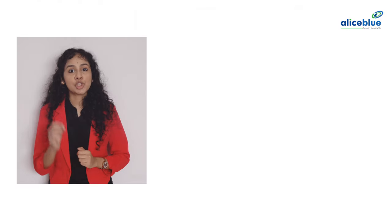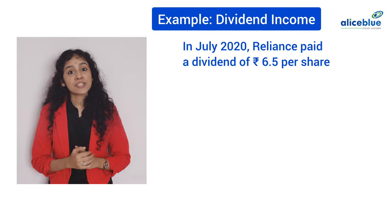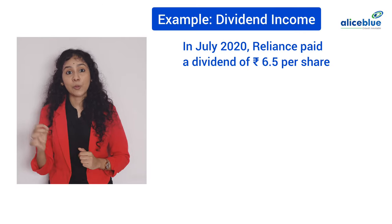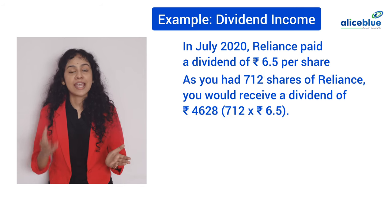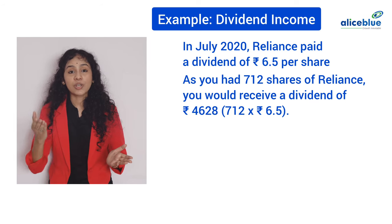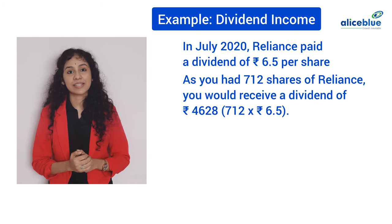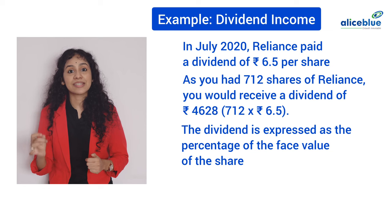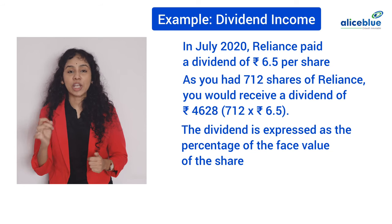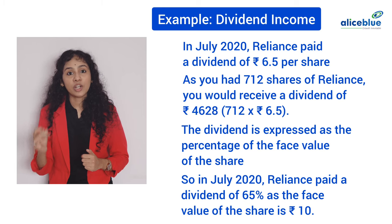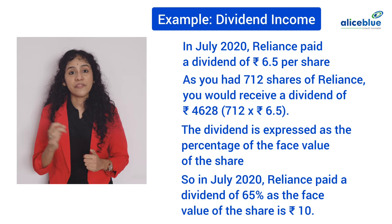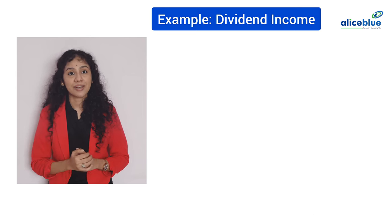Let's take the example of Reliance stock again. In July 2020, Reliance paid a dividend of Rs. 6.5 per share. As you had 712 shares of Reliance, you would receive a dividend of Rs. 4,628. The dividend is expressed as the percentage of the face value of the share. In July 2020, Reliance paid a dividend of 65% as the face value of the share is Rs. 10.